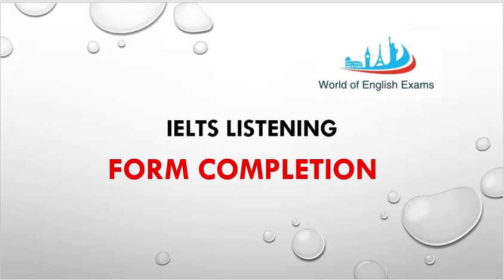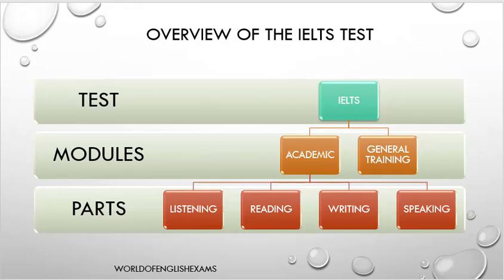Let's start today's video by overviewing the IELTS test. Basically the test is divided into two modules - academic and general. Whether you are writing the academic or the general training test, there are four parts: listening, reading, writing, and speaking. All four parts have to be attempted by all test takers regardless of the module they are selecting. The listening and speaking tests are the same for both modules; the difference arises only in the reading and writing test.